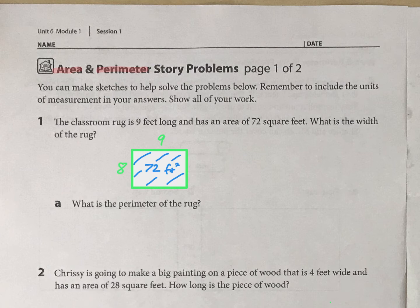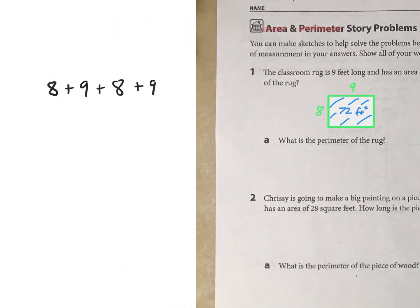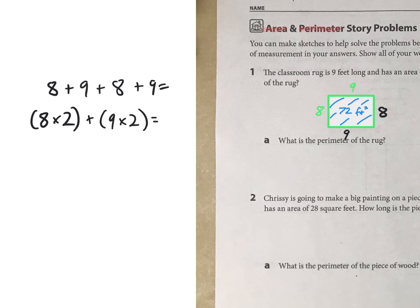Now, the perimeter is going to be around the outside, so what is the perimeter? There are a few ways to do perimeter. The most basic way when starting out might be to add up all of those sides: 9 plus 8 plus 9 plus 8. You're always going to have the same number twice — I have 8 twice and 9 twice — so I could multiply 8 by 2 and add it to 9 times 2.